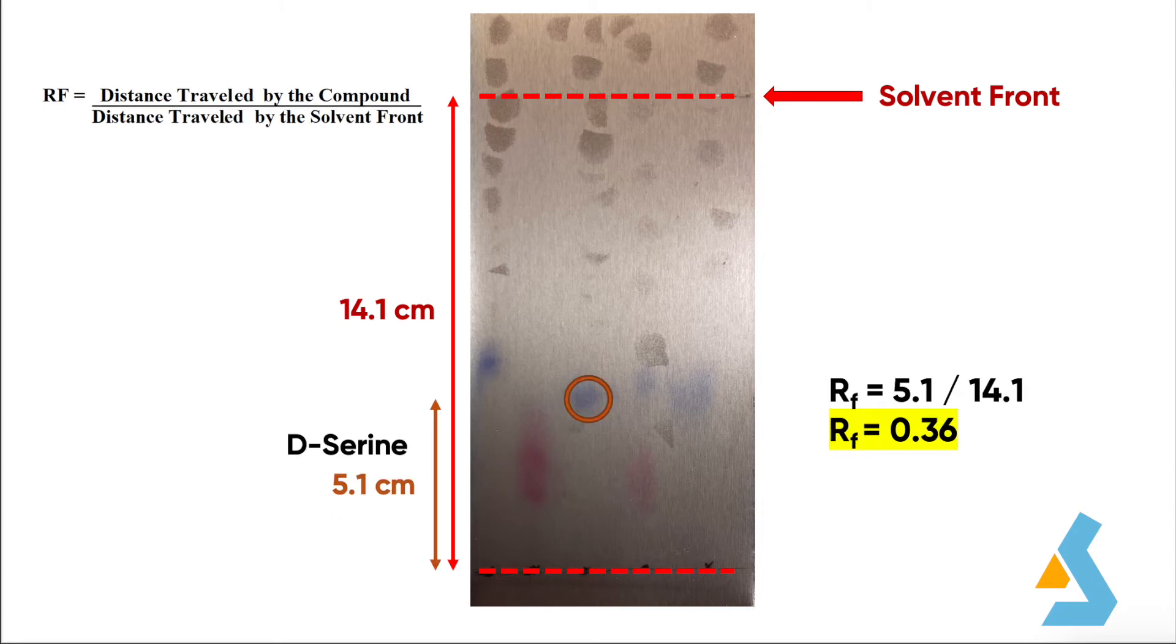The third sample that we loaded onto the TLC plate was D-serine. The distance traveled by D-serine has been found as 5.1 cm. And the retention factor for D-serine is calculated by dividing 5.1 by 14.1. Then, RF value for D-serine found as 0.36.